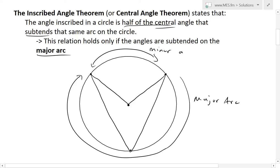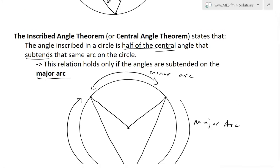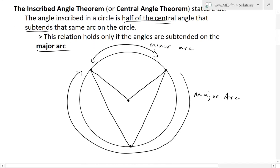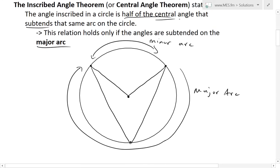I'll go over what happens when we subtend everything on the minor arc later. For now, this central angle or inscribed angle theorem states that the angle inscribed in a circle is half of the central angle. So if this is theta, the central angle would be double this — so two theta. Basically, this angle inscribed in a circle is half of the central angle, which is two theta.